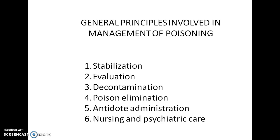This general principle can be seen in six ways. The six principles are: first, stabilization; second, evaluation; third, decontamination; fourth, poison elimination; fifth, antidote administration; and sixth, nursing and psychiatric care. For any type of poisoning, even if you have an antidote, you should always apply these principles in the management of poisoning.